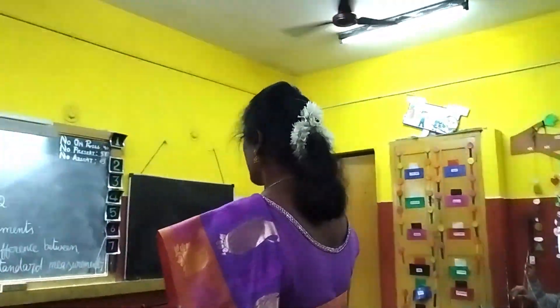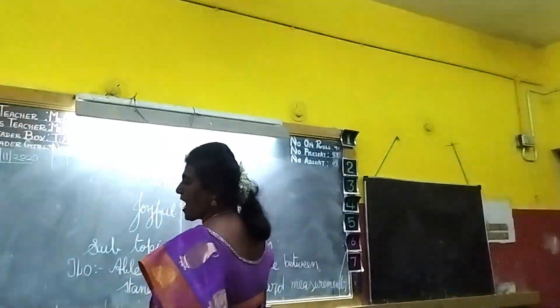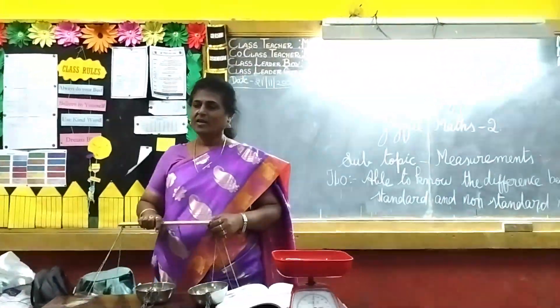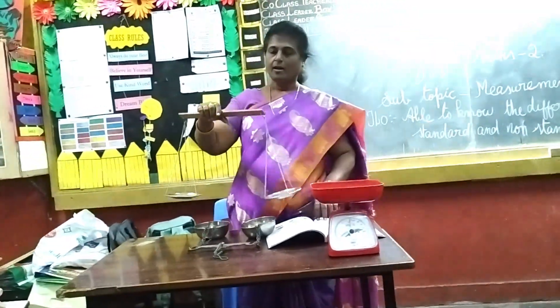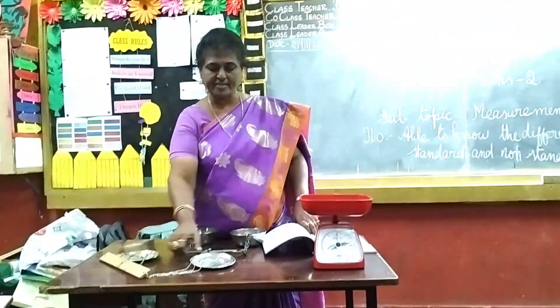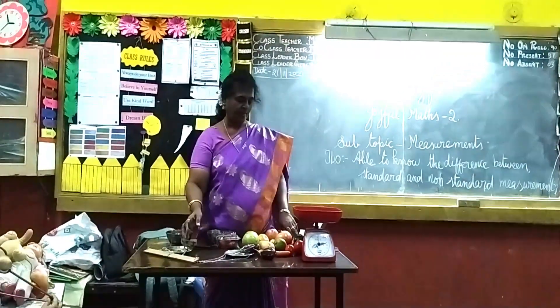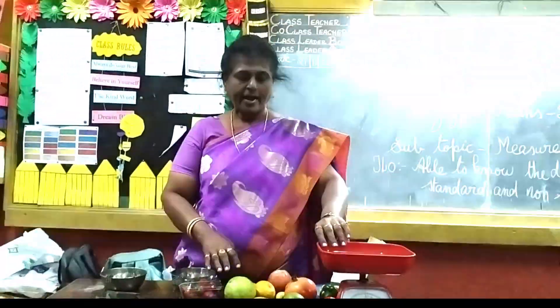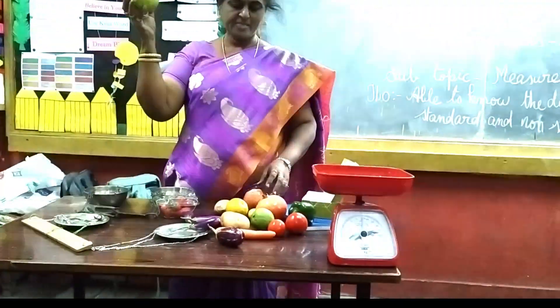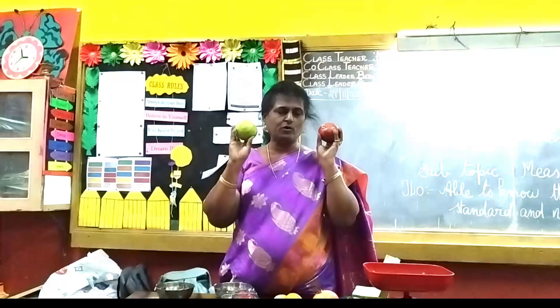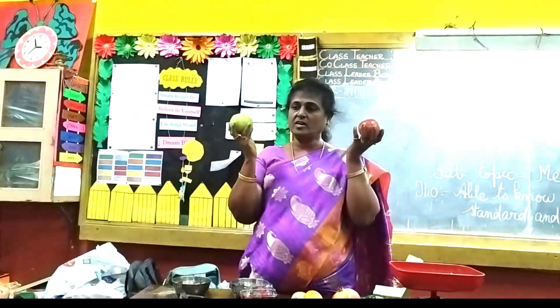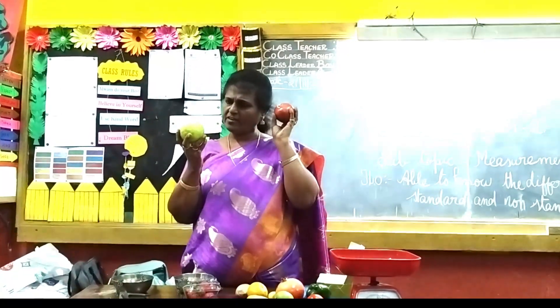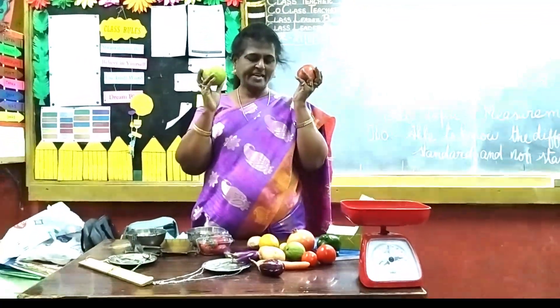Today, we are going to measure different things by using your toy balance. Now, I have some vegetables and some fruit. What is this? Gourd. What is this? Apple. By seeing this gourd and apple, can you tell me which one will be heavier? Gourd. By seeing the size you are telling.